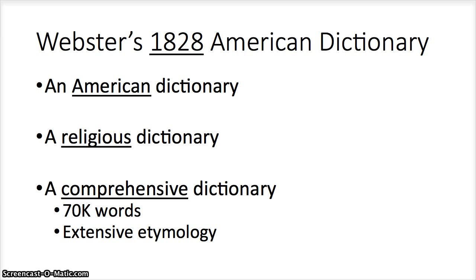There's lots to be said about this dictionary, but I want to highlight three significant points. The first is that Webster's 1828 Dictionary was an American dictionary. Dictionaries at the time, at least English dictionaries, focused on how the language was used in England. Webster explicitly wanted to create an American dictionary for how Americans wrote and spoke the language. This is great for us because Joseph Smith was American and God would have used that language when providing these revelations.